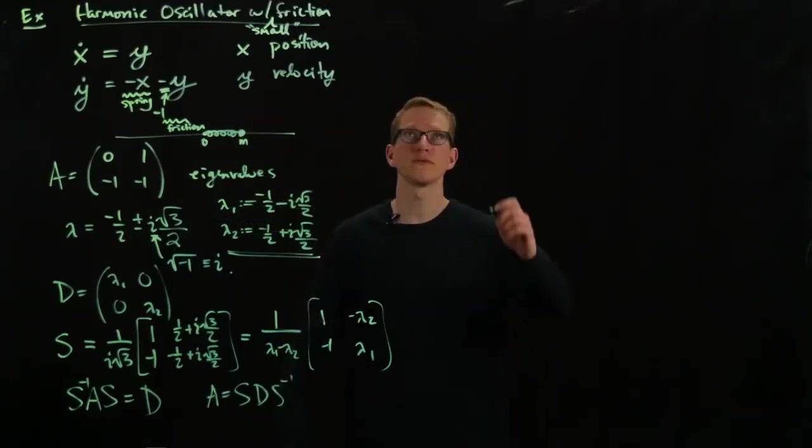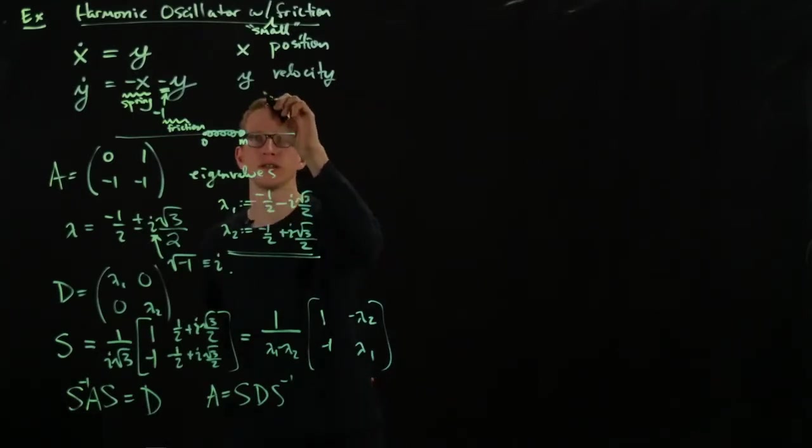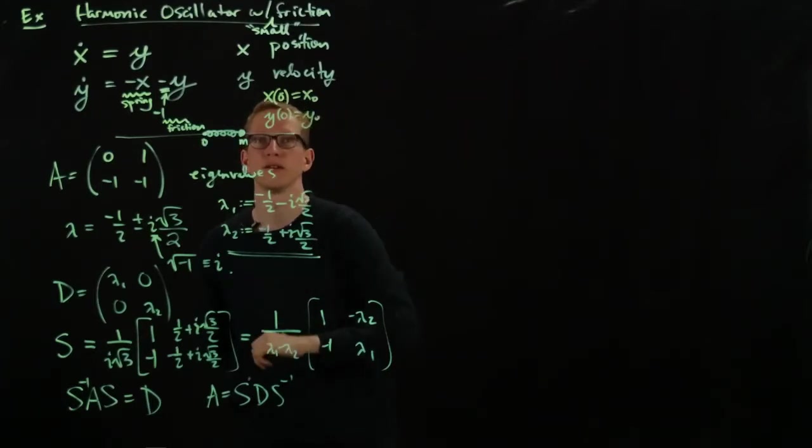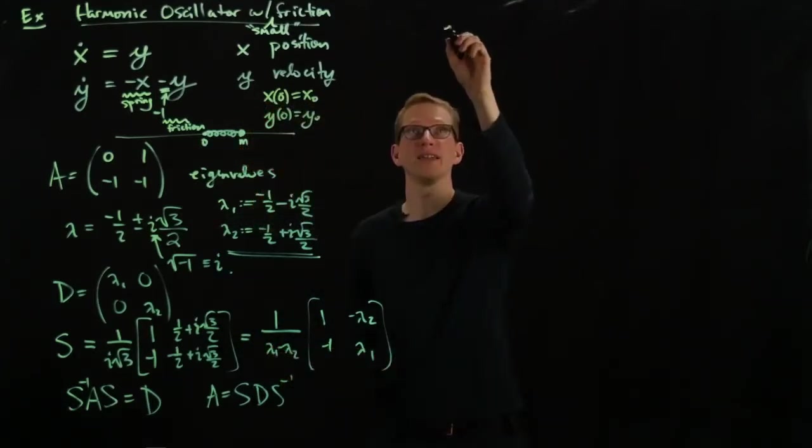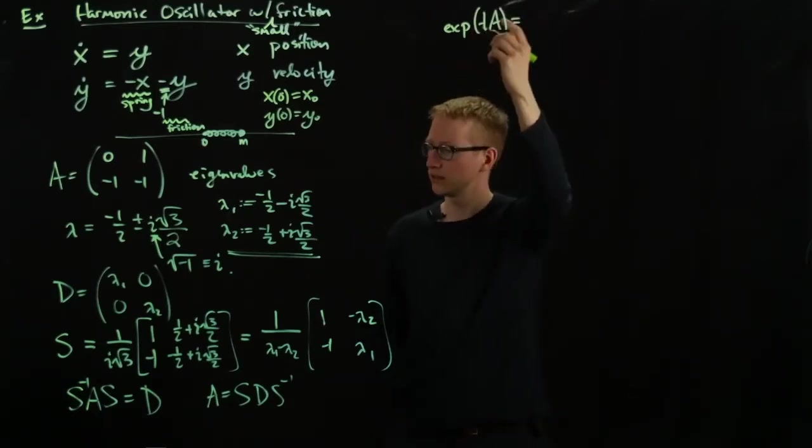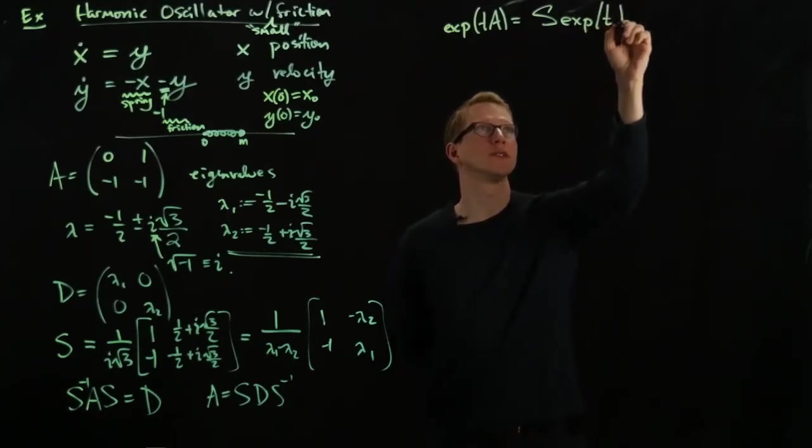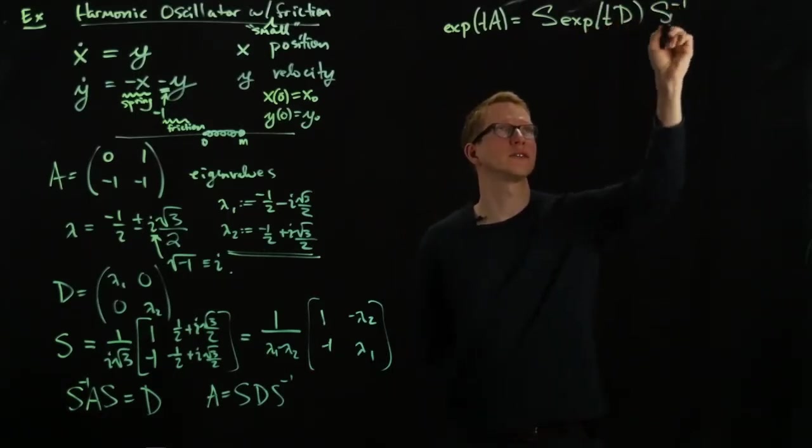So we can write down the solution of this ODE by just starting off with the initial condition. Let's say our initial condition is X of 0 equals X naught and Y of 0 equals Y naught. Why not, right? And therefore the exponential of TA is S exponential of T times our diagonal matrix, S inverse.